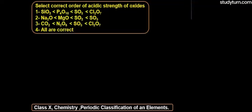Hello students. Today we will be solving a problem of class strength chemistry, periodic classification of elements. The question says: select the correct order of acidic strength of oxides.